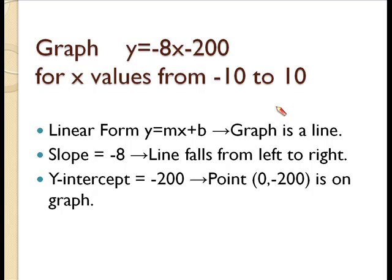Remember to first analyze the function's equation for important information. We know this is a linear function because it's in the form of y equals mx plus b. The graph is a line with a slope of negative 8 and a y-intercept of negative 200. The line will fall from left to right because of the negative slope and the y values become very negative for x values close to zero.